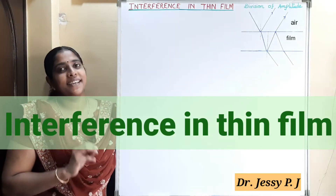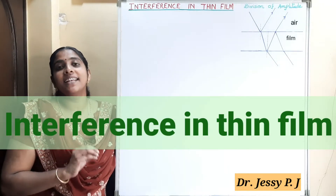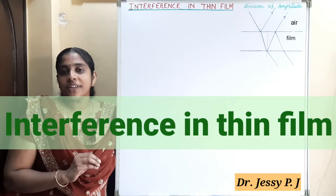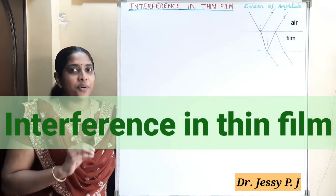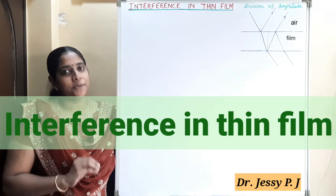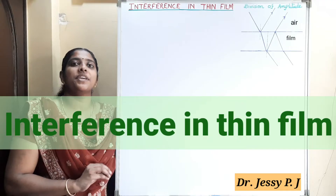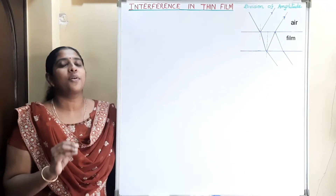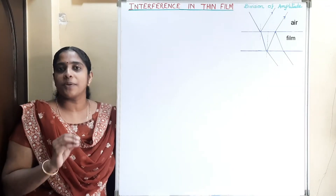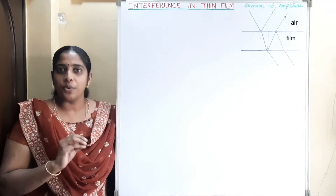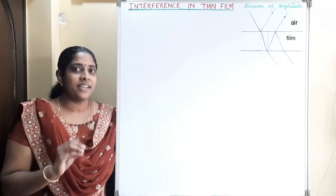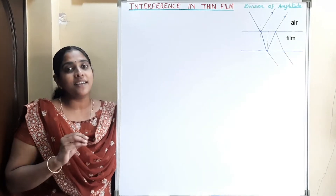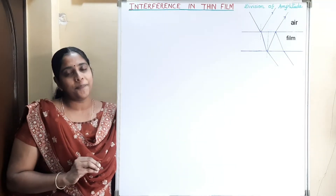Hi y'all, today we can see interference in thin film. Interference is a very interesting phenomenon in optics. It is the modification of the light energy when two or more light waves superimpose each other. The basis you have studied already in 12th standard. Today we can see the details of interference in thin film.